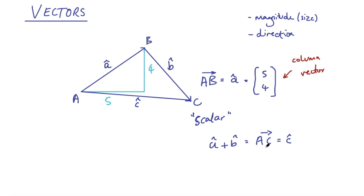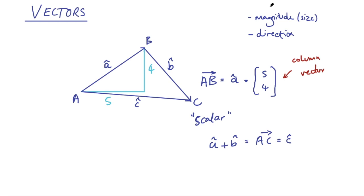So that's a very brief introduction to vectors and the notation we use. Don't worry if that was all a bit too much — we'll go through some questions and it will start to make more sense. The first question is a five mark question. It gives us three vectors: vector A is (5, −2), vector B is (1, 7), and vector C is (−7, 0). Part A says write as a column vector 2A. All we need to do to multiply a vector by a scalar is to multiply each number in that vector by 2. So 5 times 2 is 10, and −2 times 2 is −4. So 2A is (10, −4).